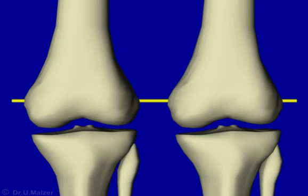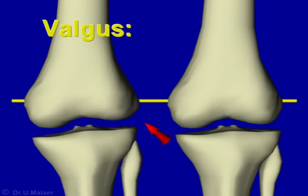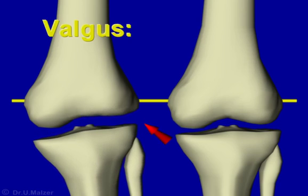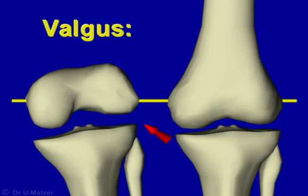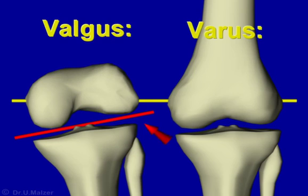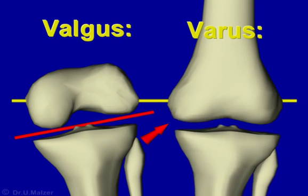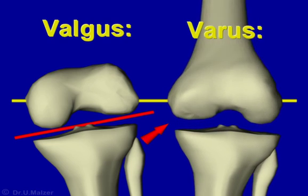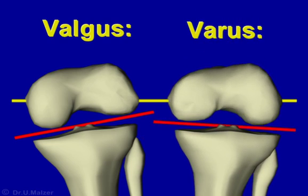In advanced varus or valgus osteoarthritis, there will be bony defects in the femur which will need to be taken into account in the planning of the bone cuts. In such cases, the posterior condylar line will no longer be a reliable reference for the rotational alignment of the posterior femoral bone cuts. That is why more consistent landmarks should be used instead.